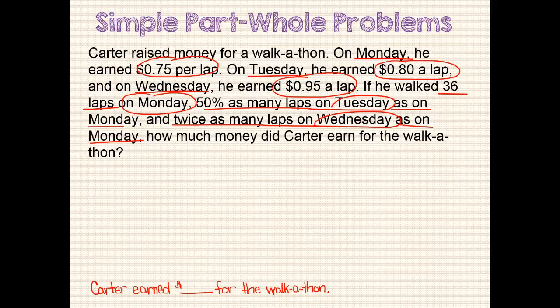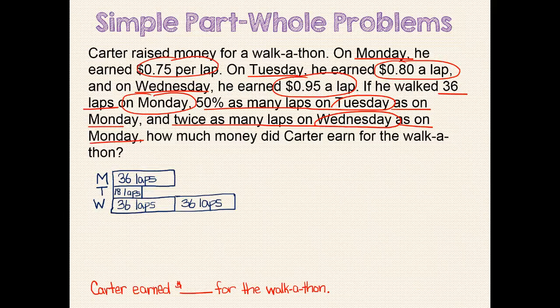We should start our model drawing with what we know. All students will not necessarily choose to draw their models alike, and that's okay. What's important is that the model makes sense to the person who is drawing it. I decided to first draw bars representing laps for each day. We are told that Carter walked 36 laps on Monday, 50% as many laps on Tuesday — which would be 18 laps — and twice as many laps on Wednesday — which would be 72 laps. Now that the laps are represented, I can go back and write how much Carter earns for each lap. Since we have to find the total earned, we can bracket the total and write our question mark.